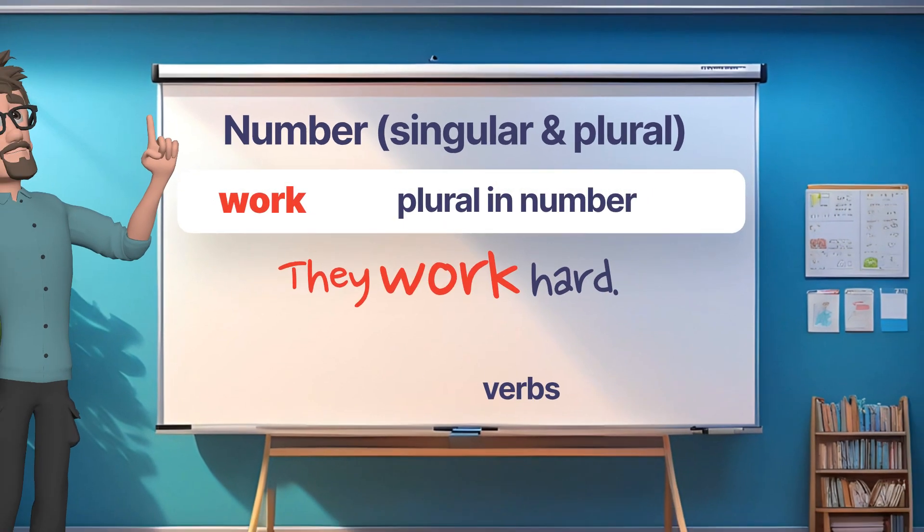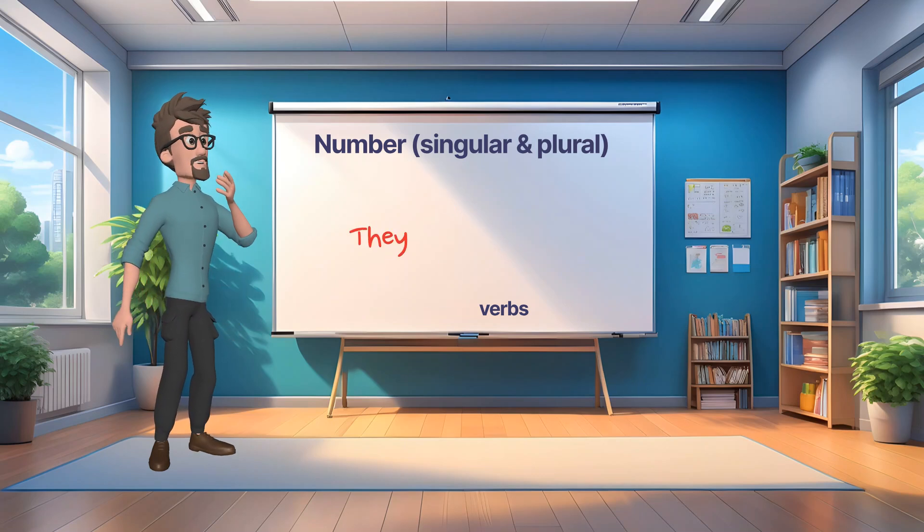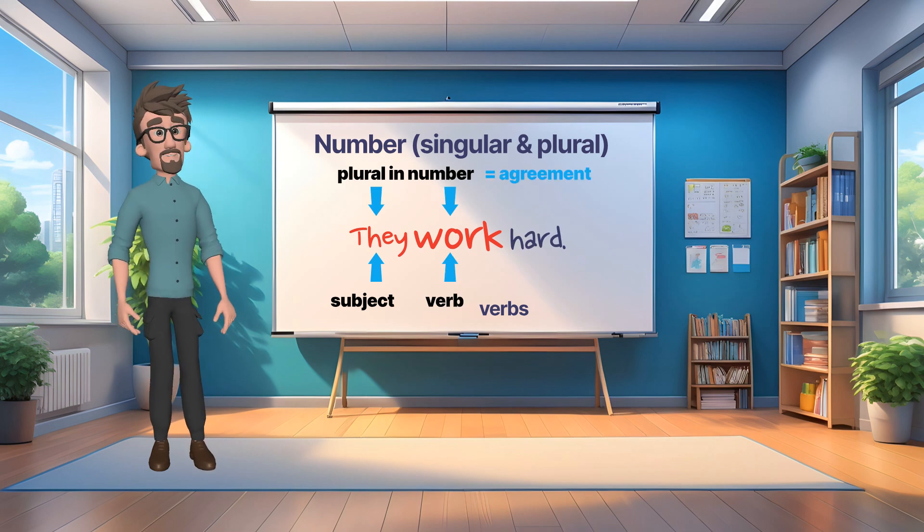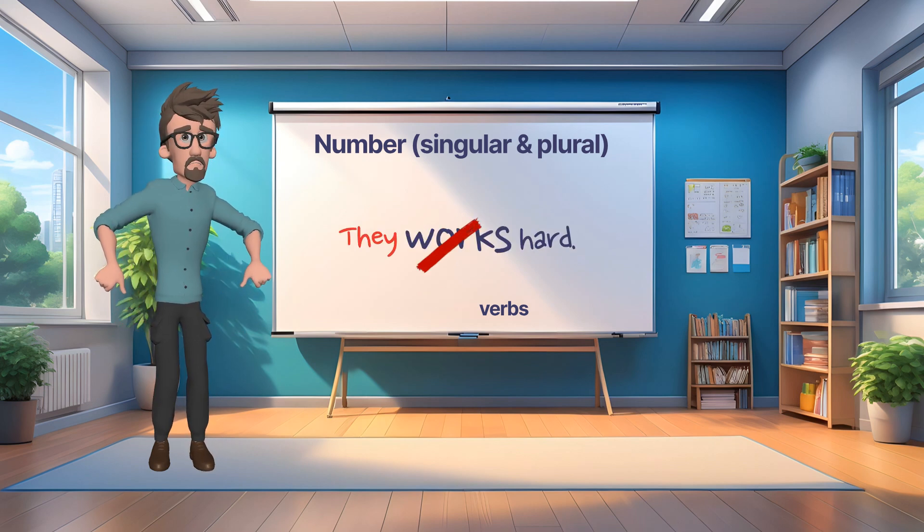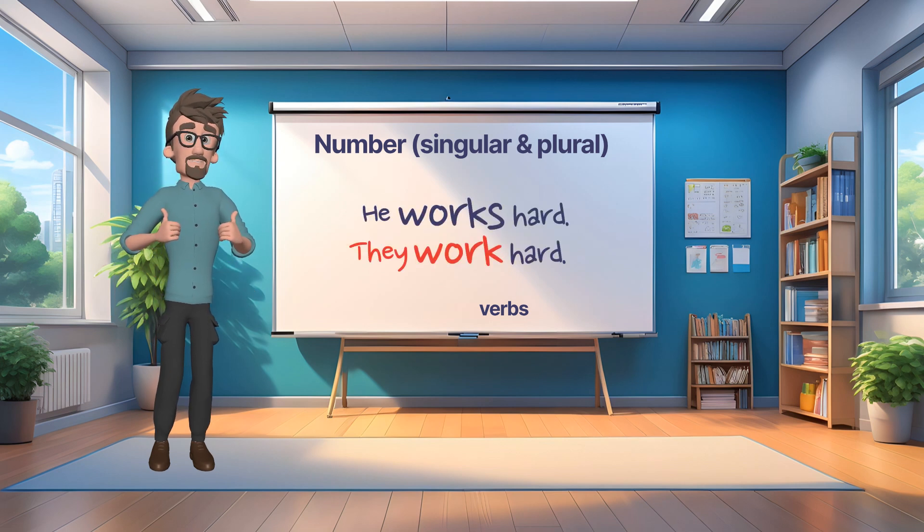As you could see here, the subject he and its verb works agreed in number. Same with the other one, they agreed with work. You couldn't say he work or they works. Let me say this again. The subject and its verb must be in agreement.